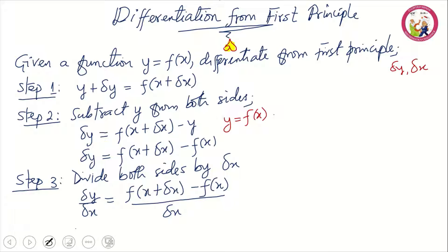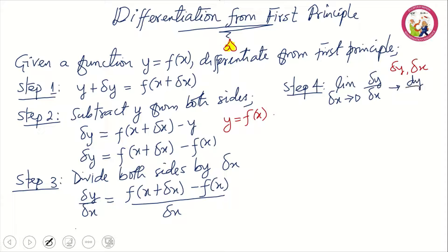Finally, step four: you take the limit as delta x tends to zero of delta y over delta x. When you take this limit, delta y over delta x becomes dy/dx. As delta x tends to zero, delta y over delta x turns into dy/dx, and at that point you arrive at your result. These are the four steps involved when differentiating a given function from first principles.